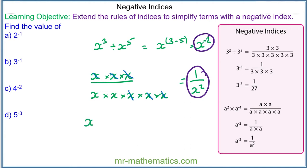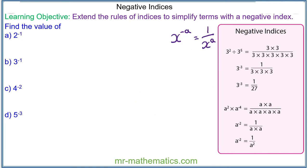So x to the negative 2 must be equal to 1 over x squared. We can define this relationship as: x to the negative a is equal to 1 divided by x to the power of a. It is this rule that we're going to use in this lesson. We begin with question a: we have 2 to the power of negative 1.